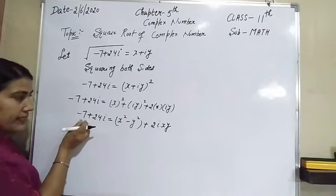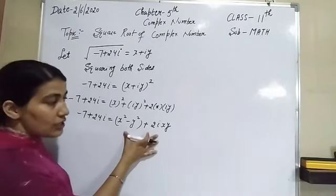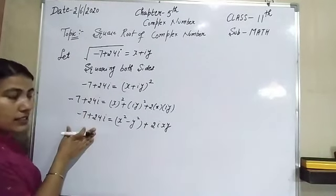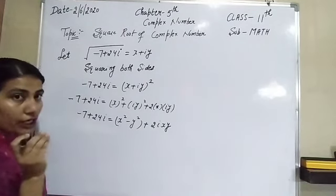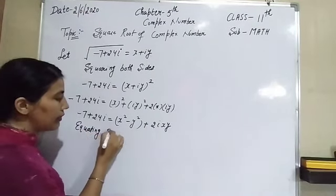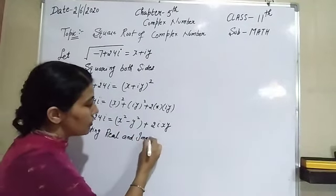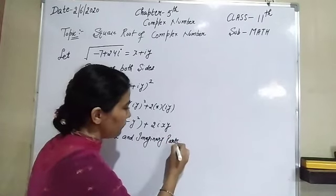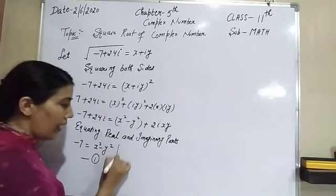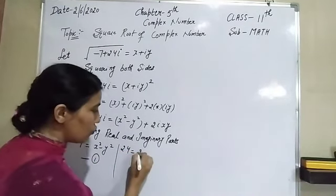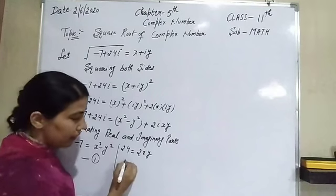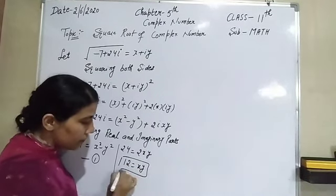Now we have two complex numbers that are equal. The real part on the left is minus 7 and the imaginary part is 24. On the right, the real part is x² minus y² and the imaginary part is 2xy. Equating real and imaginary parts gives equation 1: x² minus y² equals minus 7. And from the imaginary part: 24 equals 2xy, so xy equals 12.